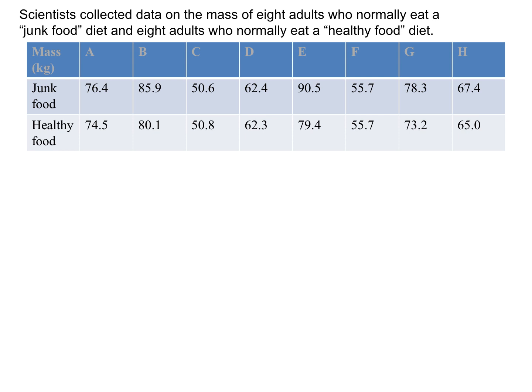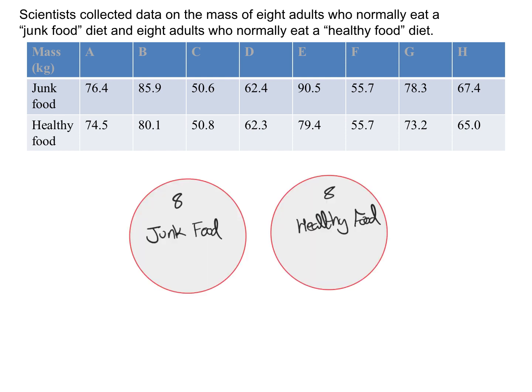To help with understanding, always work through examples yourself. Pause the video at regular intervals to try the calculation, then continue to check your answer. In this example, scientists collected data on the mass of eight adults who normally eat a junk food diet and eight adults who normally eat a healthy food diet — eight different people in each group. Since the people in one group have nothing to do with the people in the other group, this calls for the unpaired t-test.